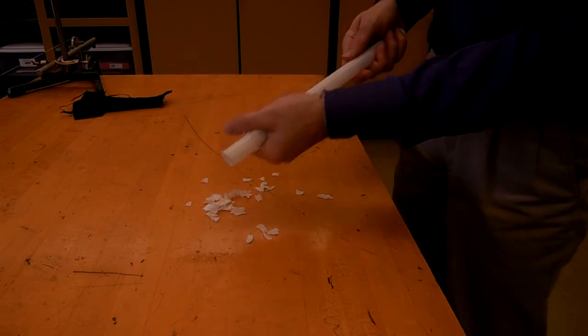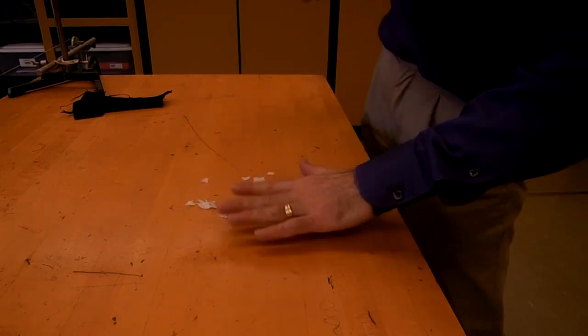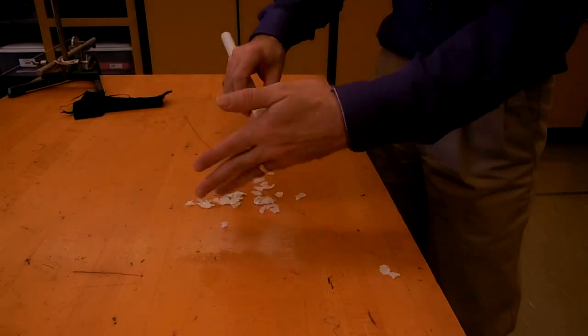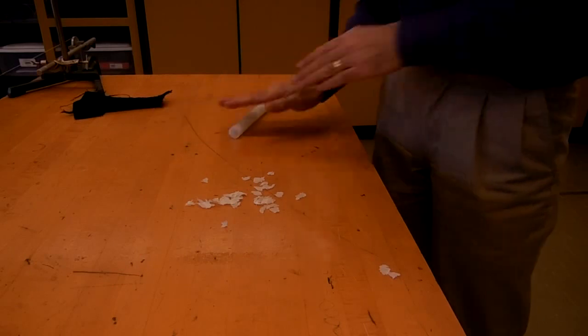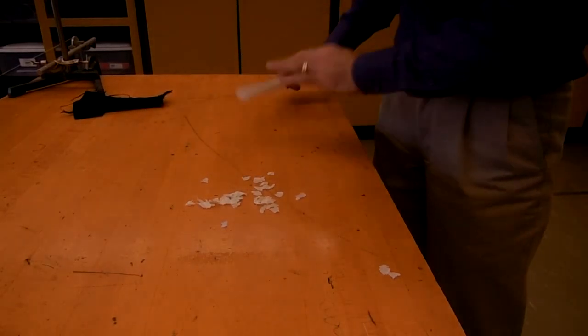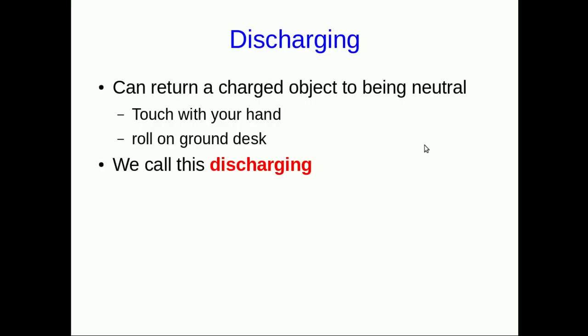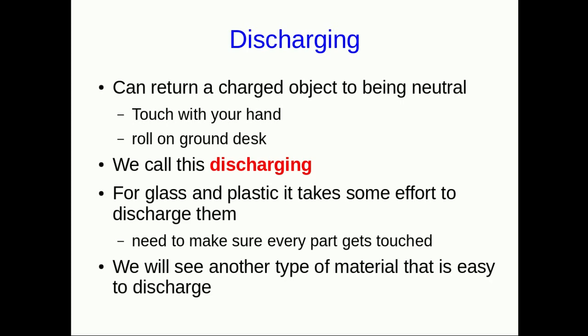However, after that, if I touch it enough and roll it around on the desk a bit and generally put it in contact with a lot of other things, it loses its charge. It no longer exerts electrical force on the paper, and so it has returned to being neutral. One thing to notice, though, is that it was a little difficult for me to get it to return to being neutral. In a little while, we'll see other things which aren't difficult to discharge.